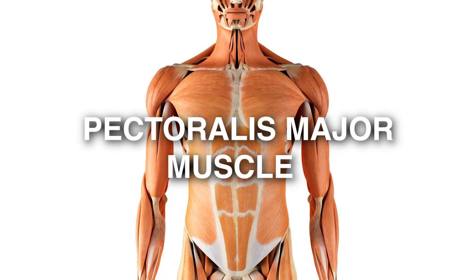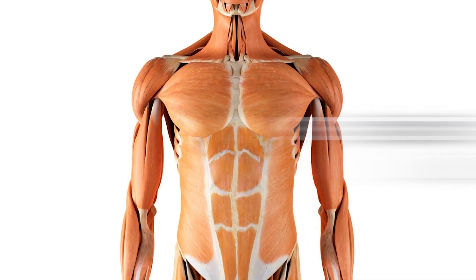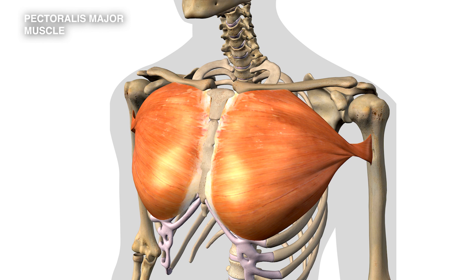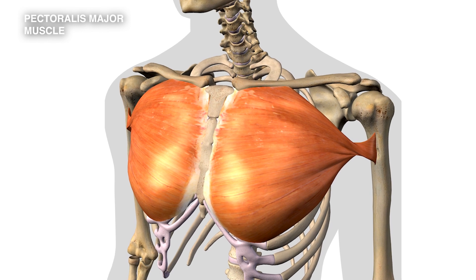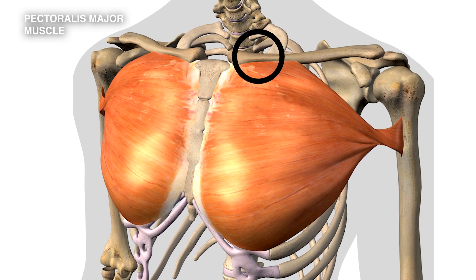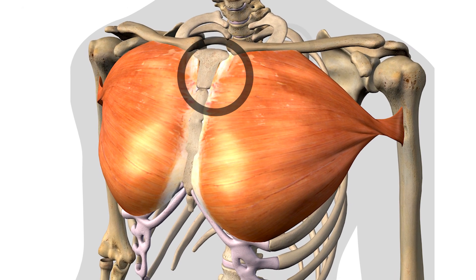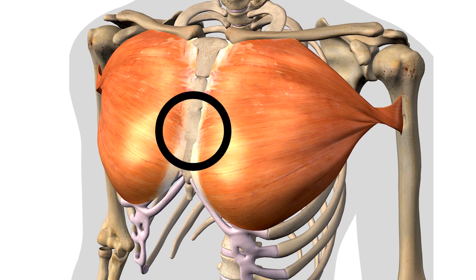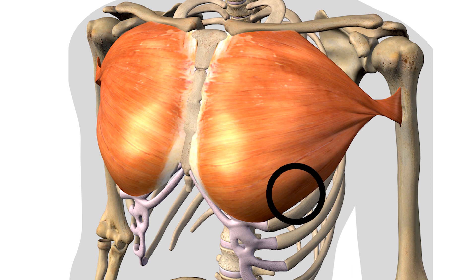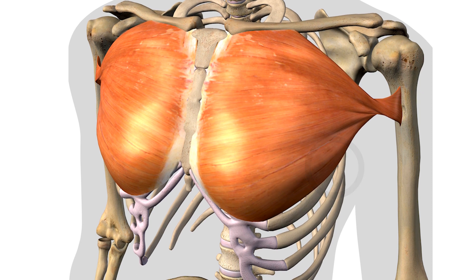This is a look at the anatomy for the pectoralis major muscle. This is a large flat muscle which runs across the front of the chest. It has three separate sections: there is a clavicular section, which attaches to the clavicle in quite a broad attachment; a sternal section, which attaches to the sternum or breastbone; and a costal section, which attaches to the ribs.